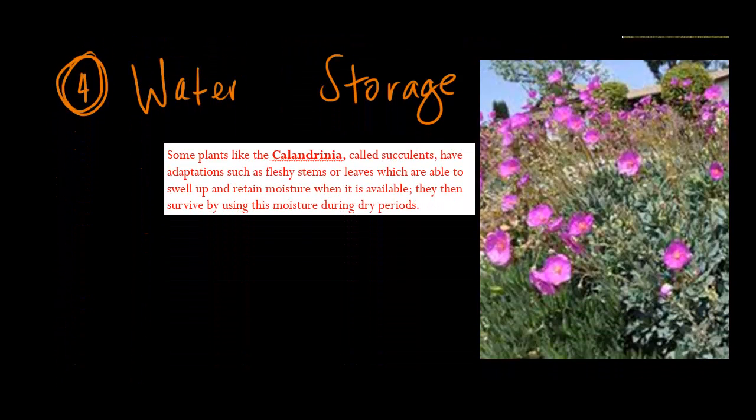And the last one that we get down to is water storage. Now this one's quite obvious, and some plants like the calandrinia, called succulents, have adaptations such as fleshy stems or leaves, which are able to swell up and retain moisture when it is available. They then survive by using this moisture during dry periods. It's just really smart mechanisms by plants, which allow them to store this water in whatever place they can, and then use it in a time of need. So this is just a photo of this calandrinia, and you can just see this here. There's these little stem things here, which allow for them to store the water.